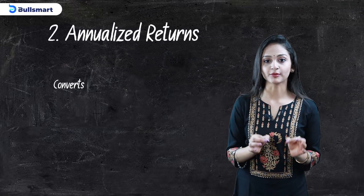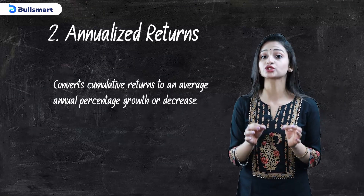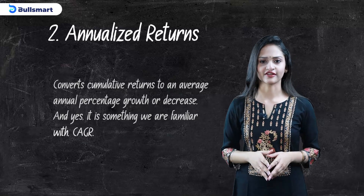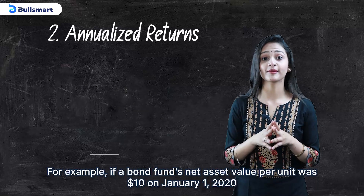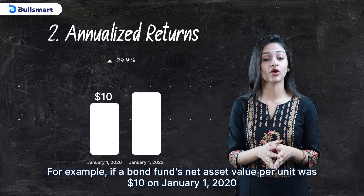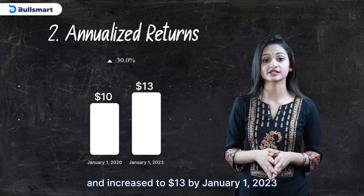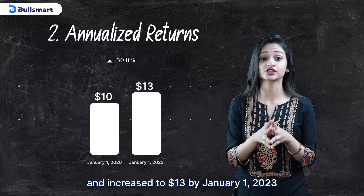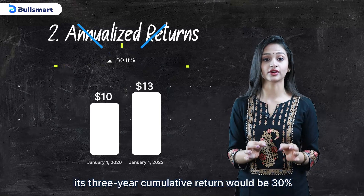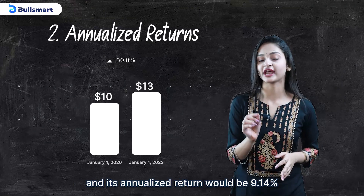Number two is the annualized returns. It converts the cumulative returns to an average annual percentage growth or decrease — and yes, it is something we are familiar with: CAGR. For example, if a bond fund's net asset value per unit was $10 on January 1, 2020 and increased to $13 by January 1, 2023, its three-year cumulative return would be 30% and its annualized return would be 9.14%.